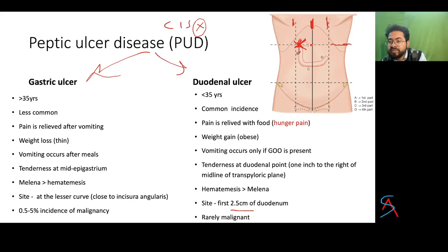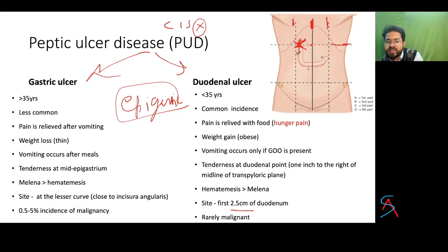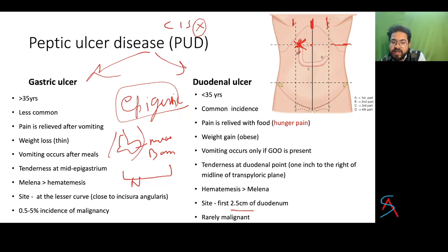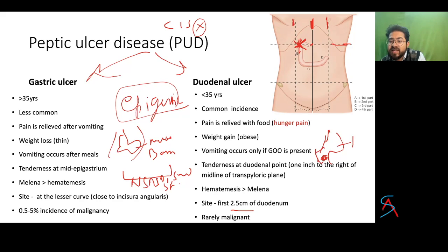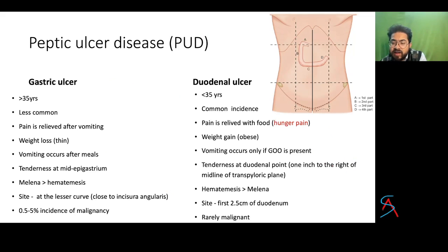Both gastric and duodenal ulcers are peptic ulcer disease and are very rarely seen before 15 years of age. Both present with epigastric pain. Risk factors include NSAIDs, smoking, spicy food, and alcohol. Duodenal ulcer pain happens in early morning or on an empty stomach due to hunger pain, while gastric ulcer pain occurs after meals. This is a very important differentiating point.